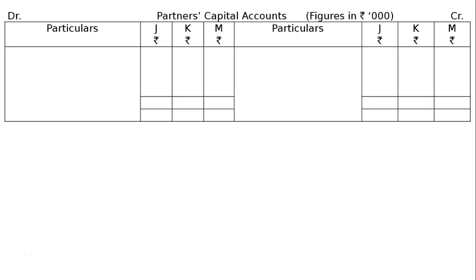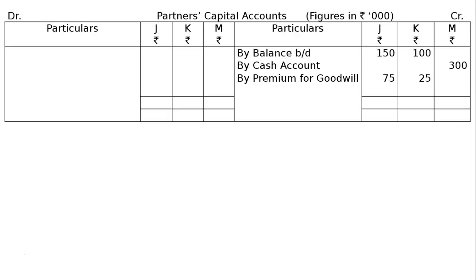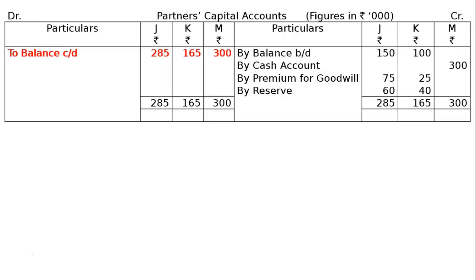Drawing partners' capital accounts with opening balances: J Rs. 1,50,000 and K Rs. 1,00,000. Cash account Rs. 3 lakh credited to M's capital account. Premium for goodwill of Rs. 1 lakh distributed in sacrificing ratio 3 to 1: J Rs. 75,000 and K Rs. 25,000. Reserve distributed in old ratio 3 to 2: J Rs. 60,000 and K Rs. 40,000. New capital balances: J Rs. 2,85,000; K Rs. 1,65,000; M Rs. 3,00,000.